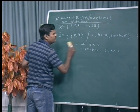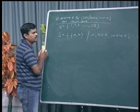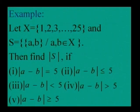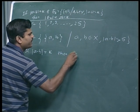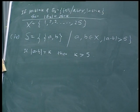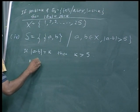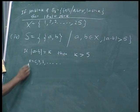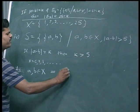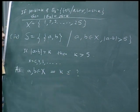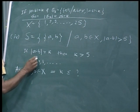Now let us go to the fourth question: mod of a minus b is strictly greater than 5. If mod of a minus b equals k, then k is greater than 5, so k can be 6, 7, 8, 9, and so on. But since a and b both belong to X, what can be the maximum value of k?